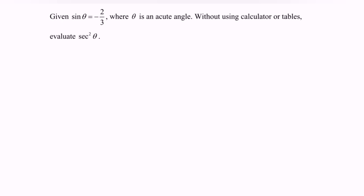Since sin is negative, the situation will be in the third or the fourth quadrant. Since θ is an acute angle, the location of the situation will be in the fourth quadrant.